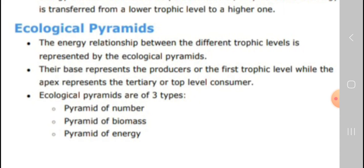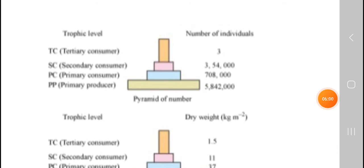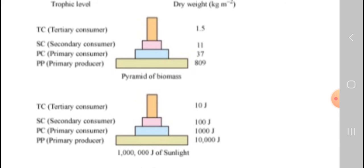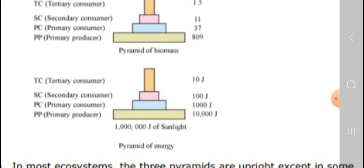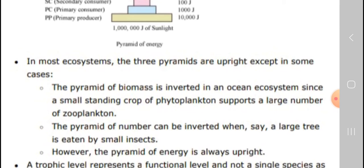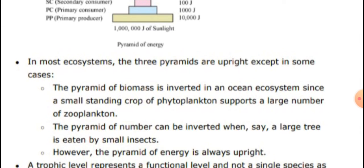There are three types of ecological pyramids: pyramid of number, pyramid of biomass, and pyramid of energy. For example, energy decreases from 10,000 joules to 1,000 joules to 100 joules to 10 joules from producers to primary, secondary, and tertiary consumers respectively. In most ecosystems, pyramids are upright, except in some cases — the pyramid of biomass is inverted in an ocean ecosystem, and the pyramid of number can be inverted when a large tree is inhabited by many small insects.